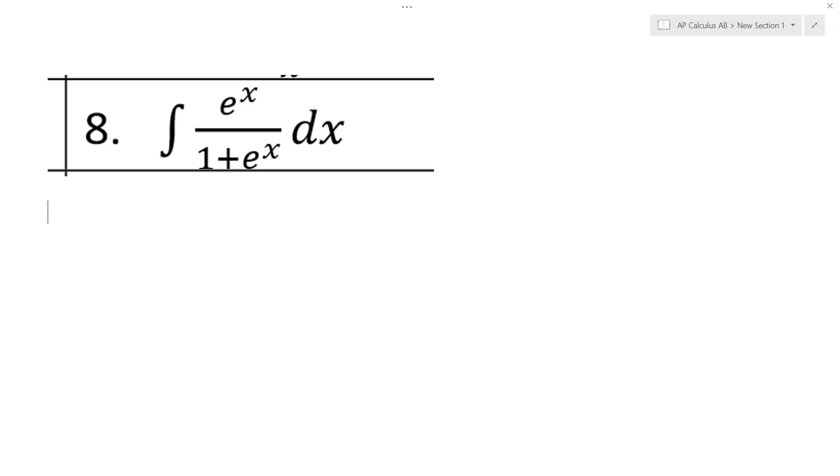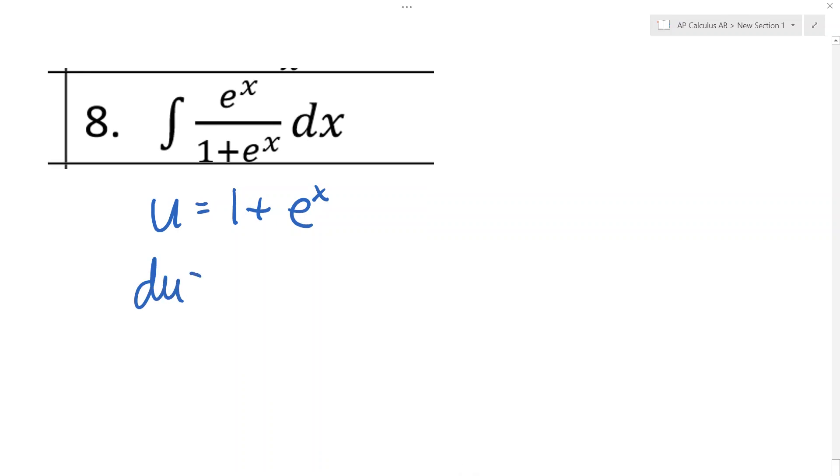And if u is the denominator here, thinking ahead a few moves, I can see that's going to work. Because if u is 1 plus e to the x, then du is e to the x dx, which is what we have sitting on top in the numerator.